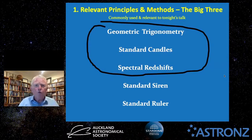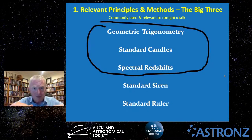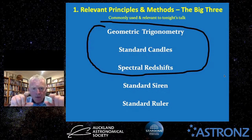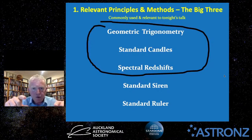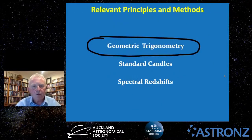With the relevant principles and methods, last month we covered five main methods — from geometric trigonometry right through to standard rulers. Tonight I'm going to focus on those top three: geometric trigonometry, standard candles, and spectral redshifts, because those are the most commonly used and most relevant to tonight's talk.